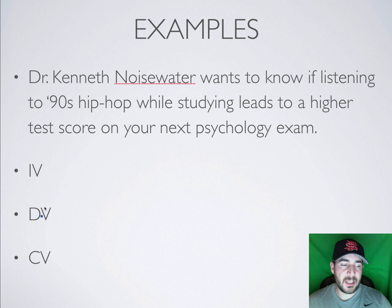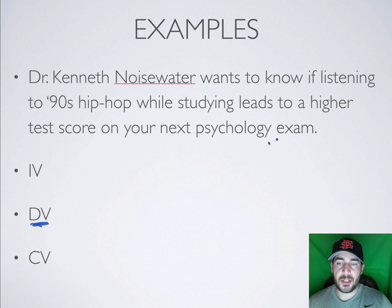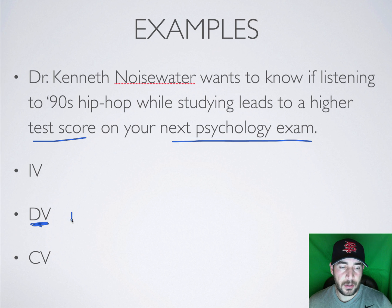The first thing you want to look for is the dependent variable — it's usually the easiest thing to find. What is being measured here? Our test score on our next psych exam. That's what's being measured, so the dependent variable would be test score.